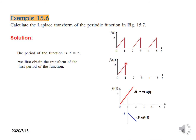Now we have to define f1(t) mathematically. If you look carefully, this function has a slope of 2: x is 1 and y is 2, so slope is 2. This straight line can be written as 2t, and it can also be written as 2t·u(t) because u(t) means just 1 after 0. Now to get this one period, we have to terminate it after t equals 1.